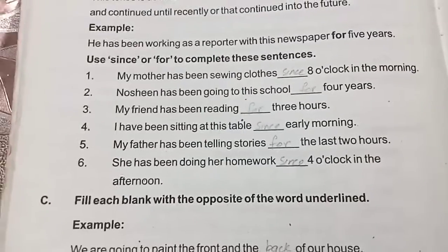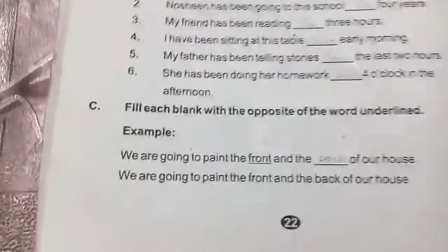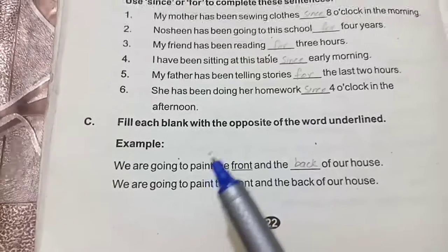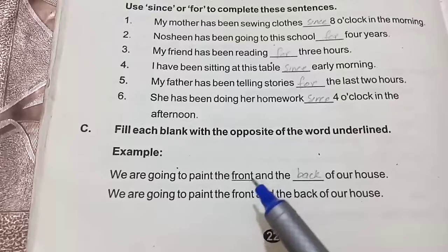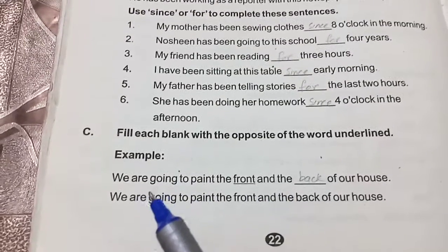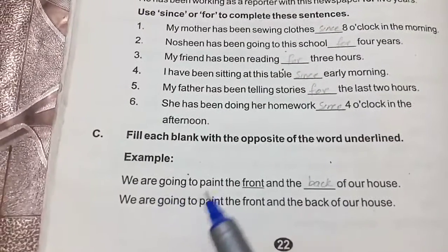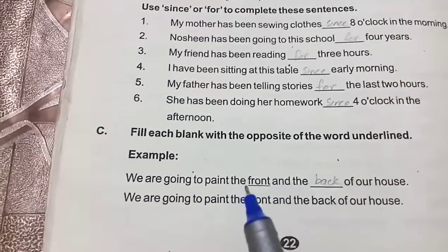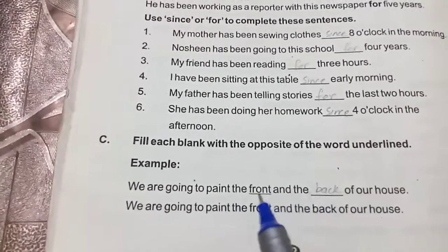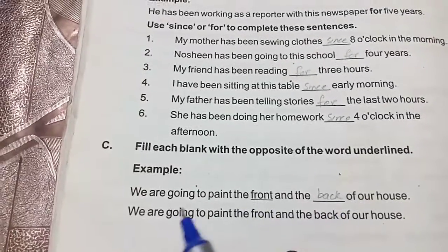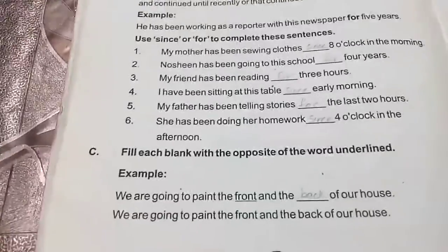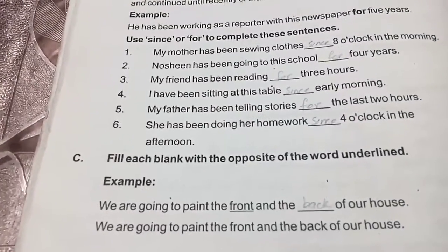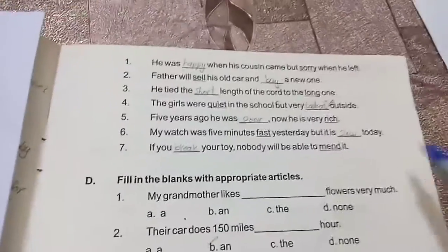Now we move to Activity C: fill each blank with the opposite of the underlined word. The example is: we are going to paint the front and the blank of our houses. The opposite of 'front' is 'back,' so we write: we are going to paint the front and back of our houses.